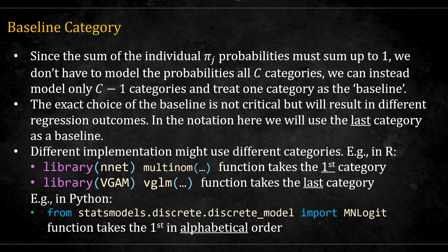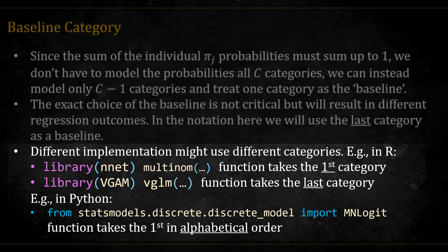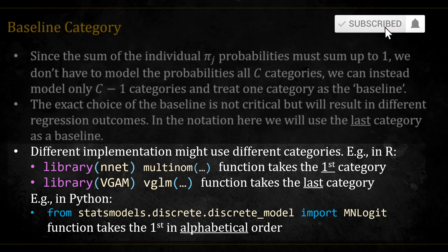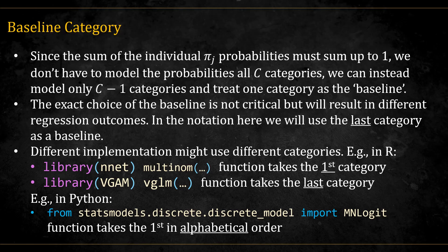Different code implementations use different baselines. For example, the multinom function in the nnet library uses the first category. The vglm function in the VGAM library takes the last category. And in Python, the MNLogit function from statsmodels takes the first according to alphabetical order. So it's something to watch out for when comparing results across different implementations.